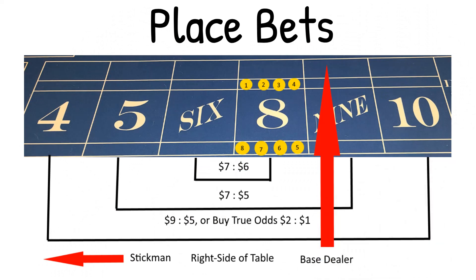Here's a closer look at the box numbers. In this diagram, there's a red arrow labeled the stickman pointing to the left, and a red arrow labeled base dealer pointing straight up — this is the right side of the table. The eight different player spots are marked from the base dealer's perspective. As a base dealer, from their left, they pay out pass line winners in order one through eight, going clockwise. Likewise, when they pay place bets, they pay from the stick first and then back toward them — eight, seven, six, five, four, three, two, one.